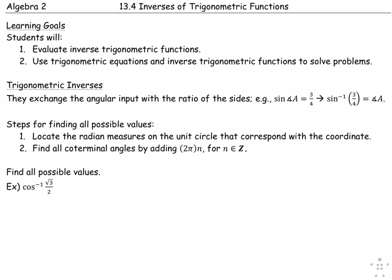Trigonometric inverses exchange the angular input with the ratio of the sides, swapping input with output. The steps for finding all possible values: First, locate the radian measure on the unit circle, and then find all coterminal angles by adding 2π times n, where n is an element of the set of integers, positives and negatives.